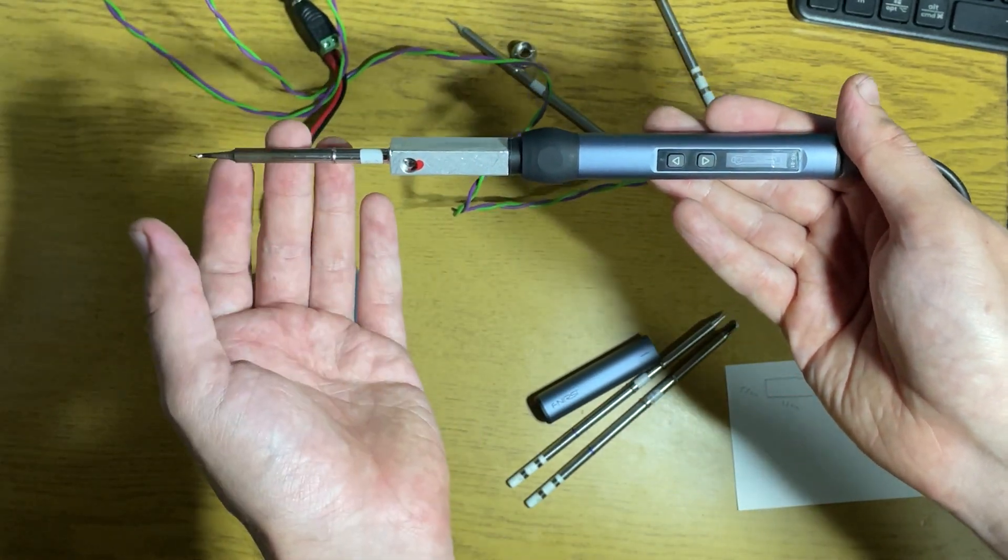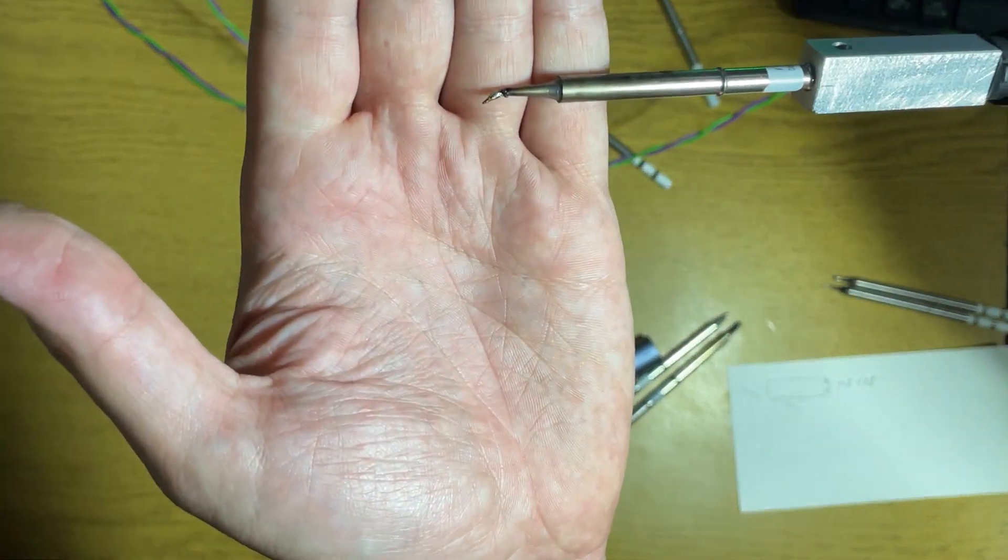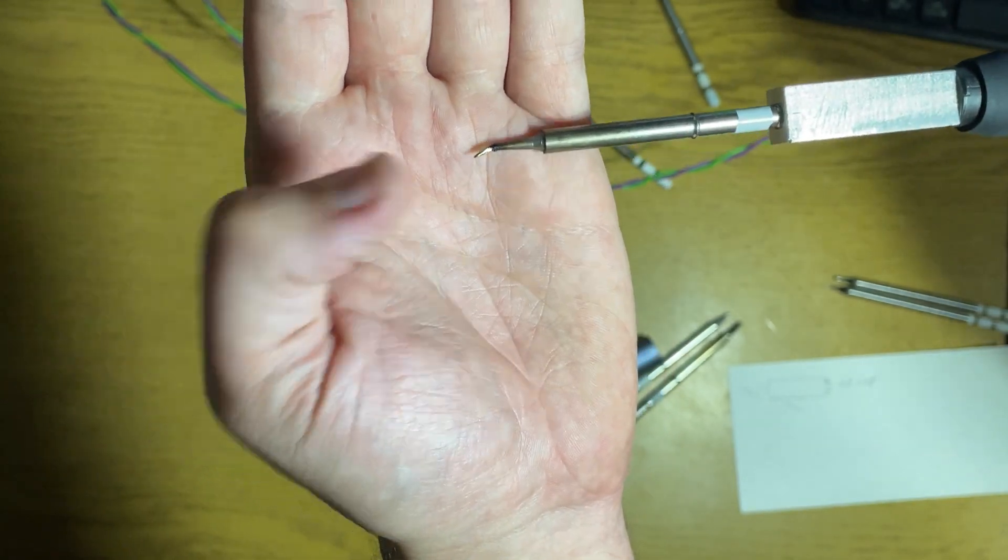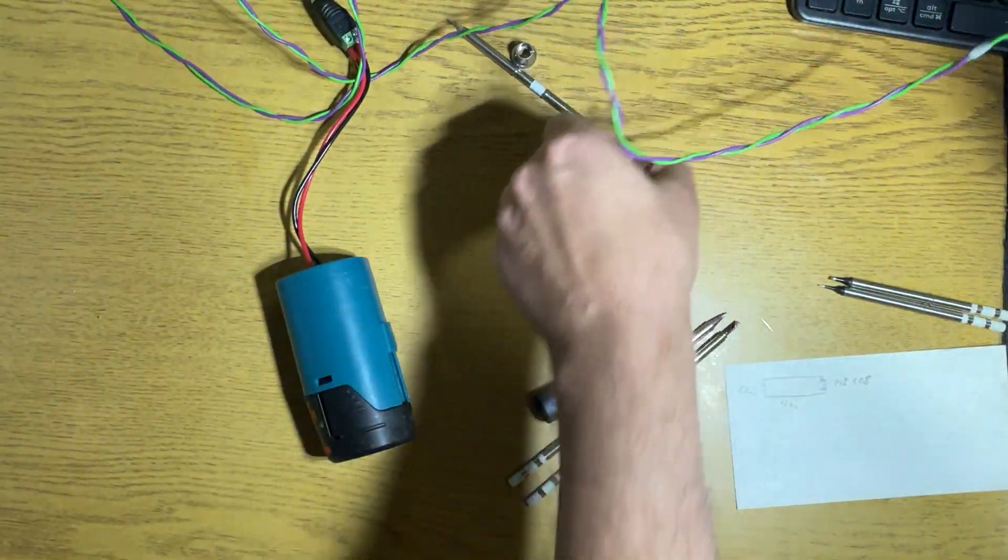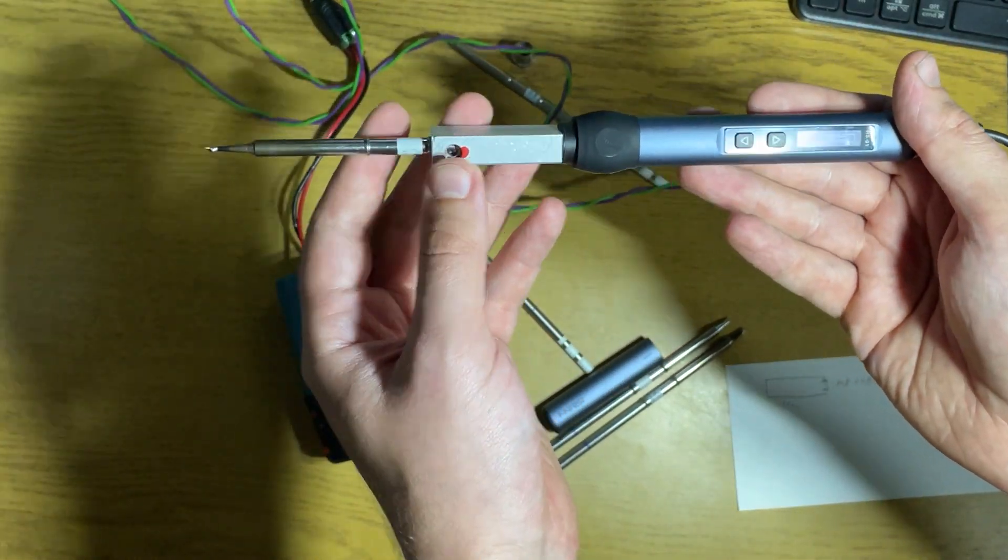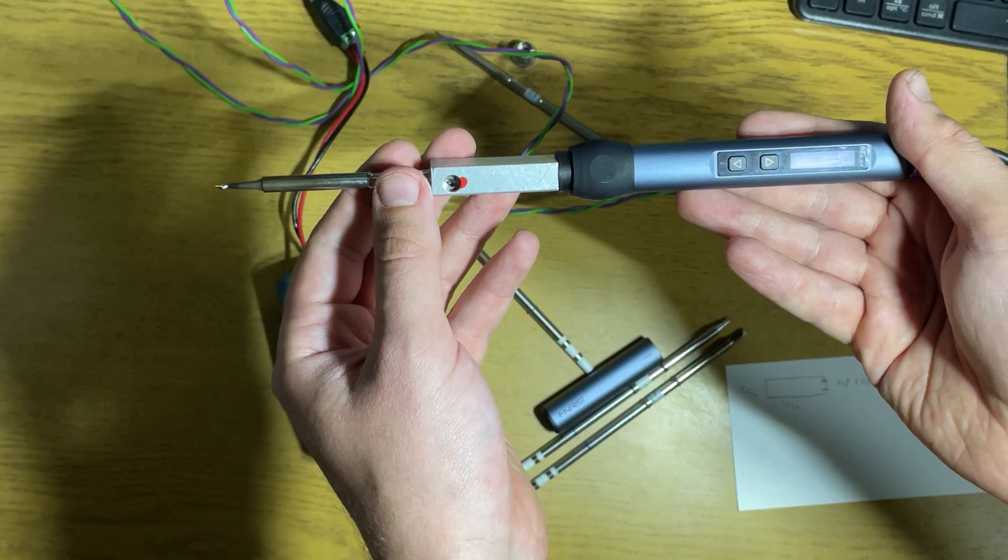But anyhow, if you want original, you can get them. But if you get T12 or you need like this one—this one is very good for small components—but this type you cannot get on this version, this small tip. And it works fine with heating and with everything.